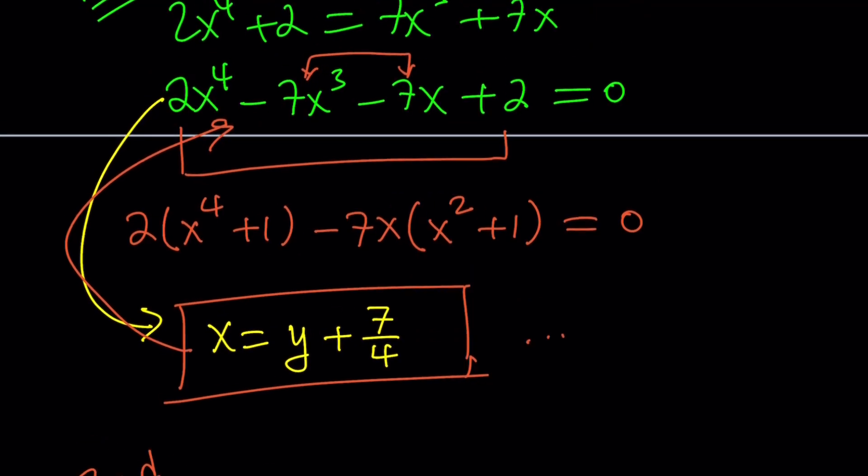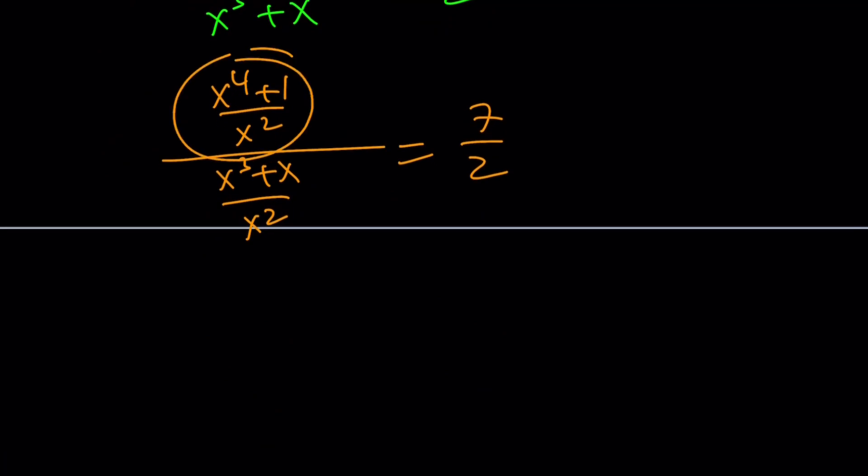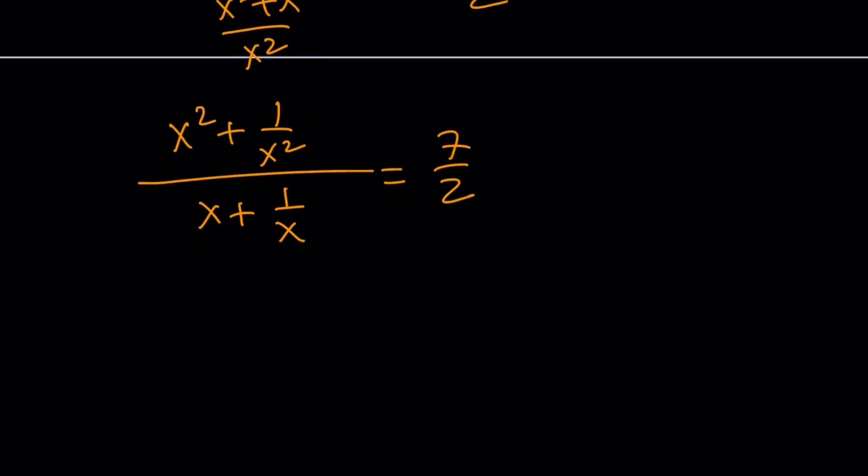So yes, you could do something about it. I'm going to do the following. I would like to divide the top and the bottom by x squared. Now you might be asking, why do we do that? Because this is a symmetric equation. But notice that when you divide by x squared, something super-duper nice is going to happen. You can go ahead and separate these. This becomes x squared plus 1 over x squared, and this becomes x plus 1 over x. And guess what? They are related. Awesome. Now we got ourselves something to work with.